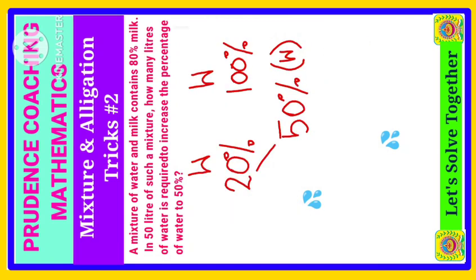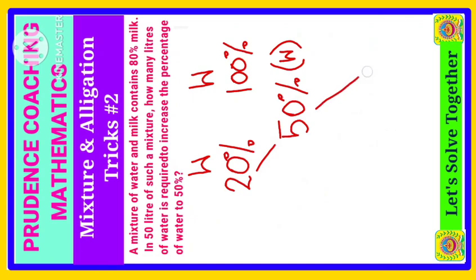If we find out the difference, 50 minus 20 gives us 30, and 100 minus 50 gives us 50. The ratio we're getting is 50 to 30, which simplifies to 5 is to 3.